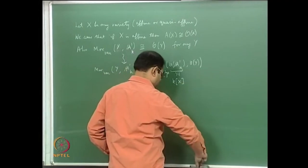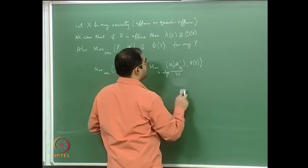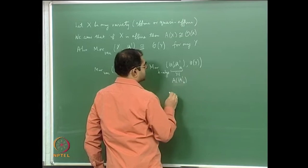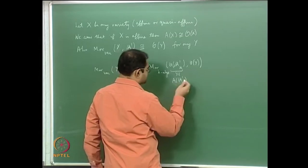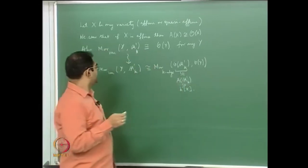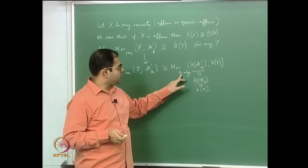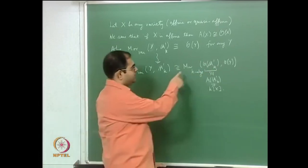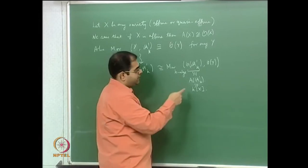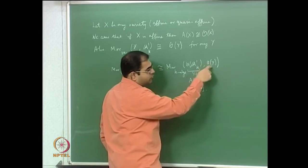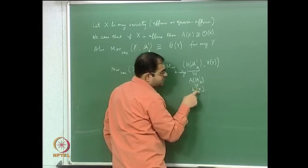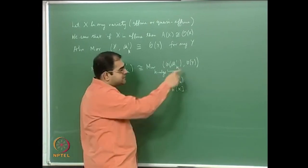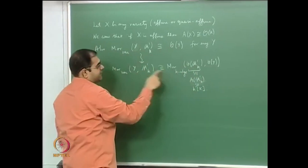Using the fact that O and A are the same for an affine variety, we can identify this with A(A¹) ≅ k[x]. By the universal property of the polynomial ring in one variable, any k-algebra homomorphism from k[x] to O(Y) is completely controlled by the image of x — the element of O(Y) that x maps to. Therefore there are as many k-algebra homomorphisms as there are elements in O(Y), so this set is the same as O(Y).